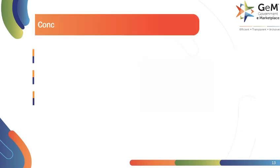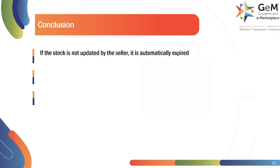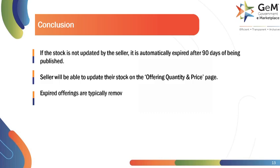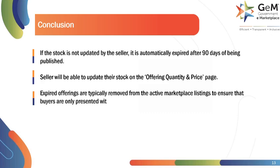Here are a few key takeaways from this module. If the stock is not updated by the seller, it is automatically expired after 90 days of being published. Sellers will be able to update their stock on the Offering Quantity and Price page. Expired offerings are typically removed from the active marketplace listings to ensure that buyers are only presented with products or services that are currently available and up-to-date.